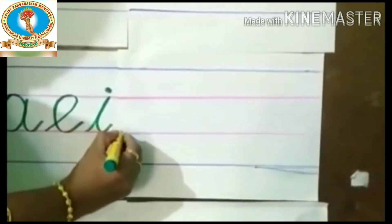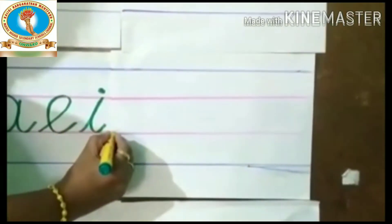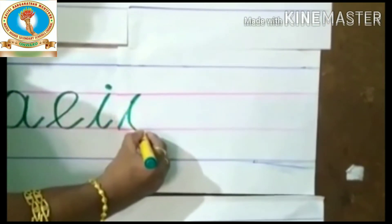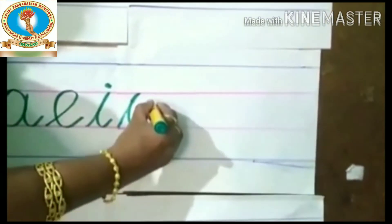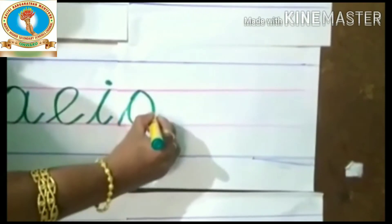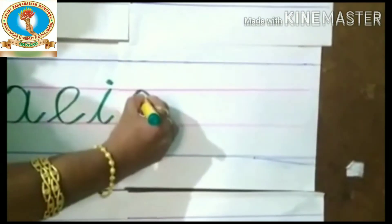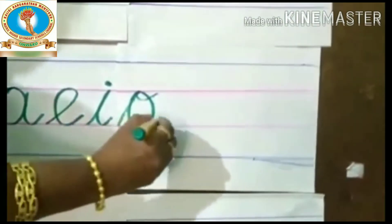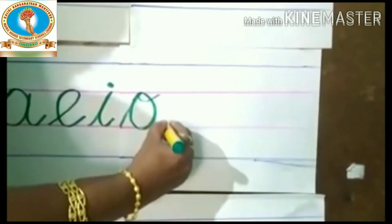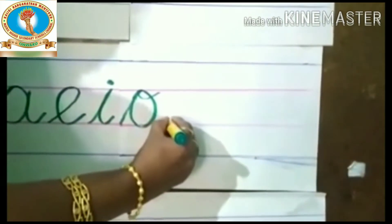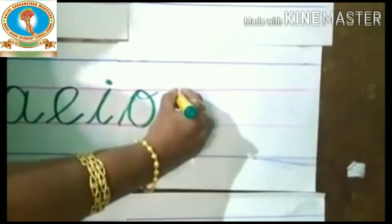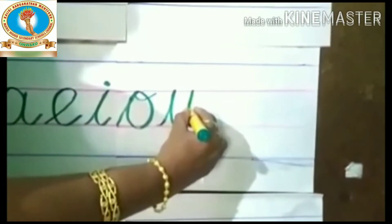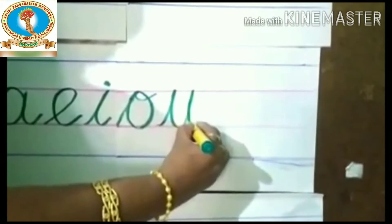Next one is O. Put the slanting line and small curve, test the third line and go up, small loop. O. The next letter is U. Put the slanting line and come down, again test the third line, go up and put the small curve. U.